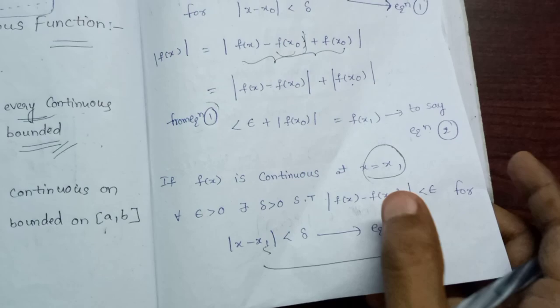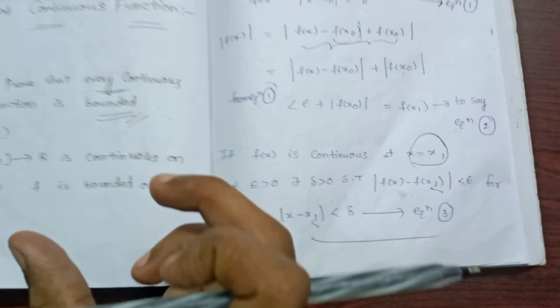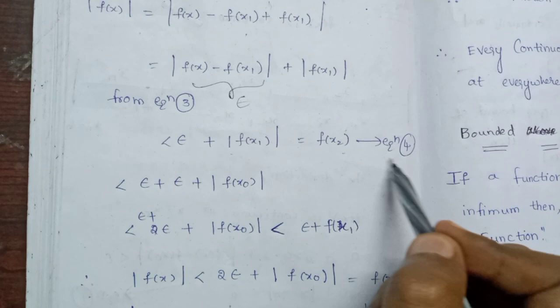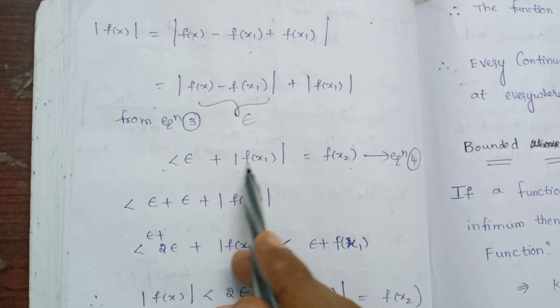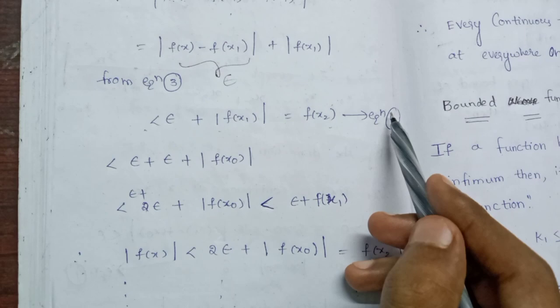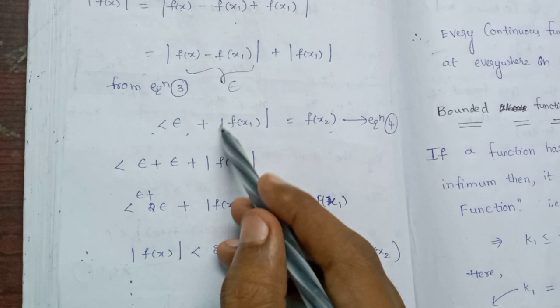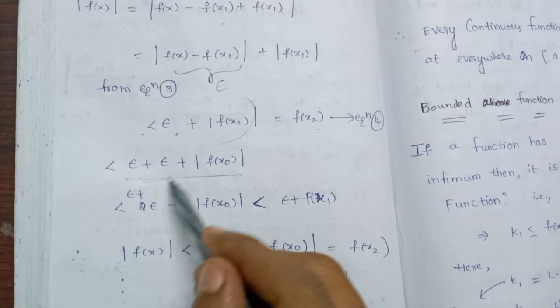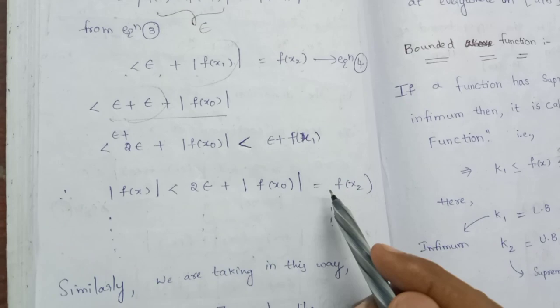This one is continuous — we have a continuous function. Here we have to keep the continuous function bounded. Here we have equation number 4: f of x is less than epsilon plus mod f of x1, which equals f of x2. Here you can see f of x2 is less than epsilon plus mod f of x1. If you have epsilon plus epsilon, you have 2 epsilon. 2 epsilon plus mod f of x is done.